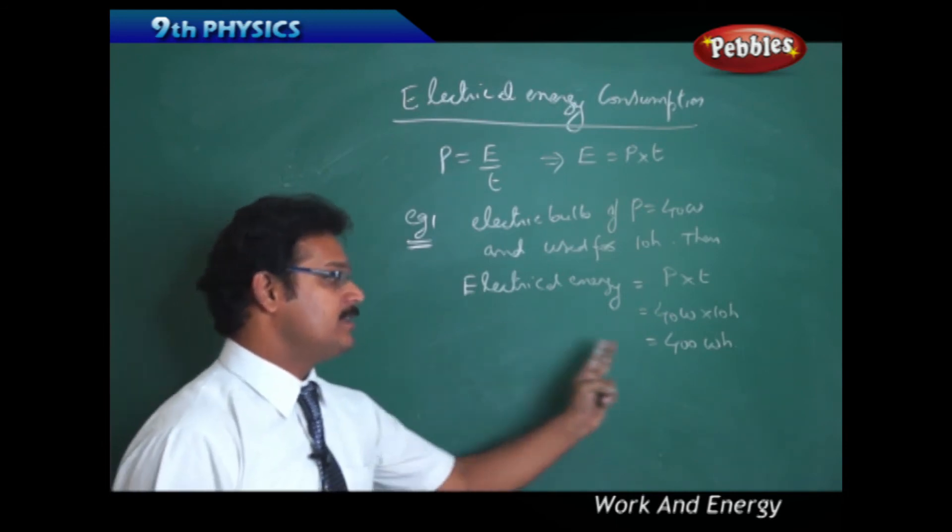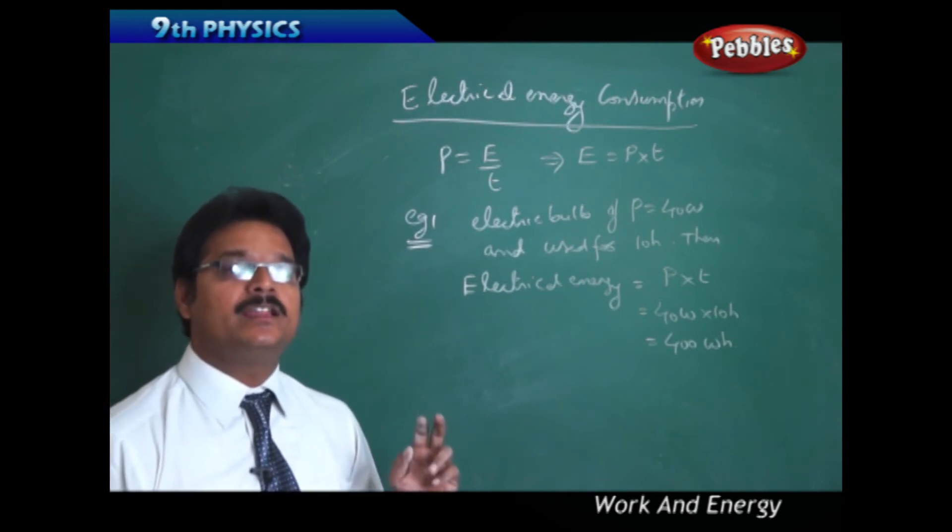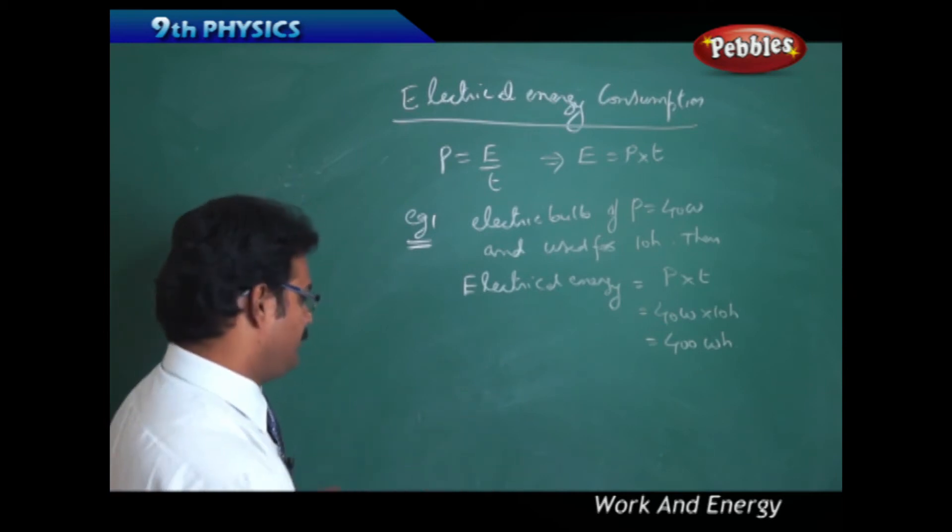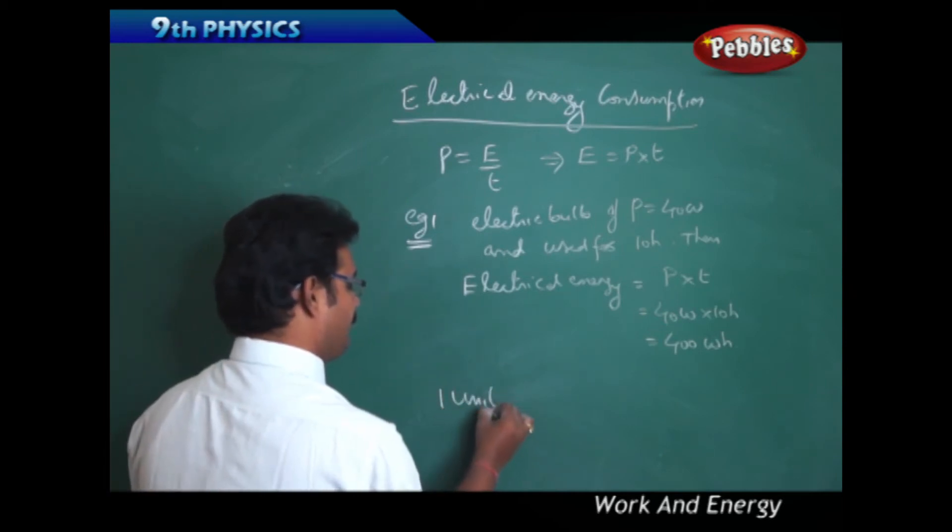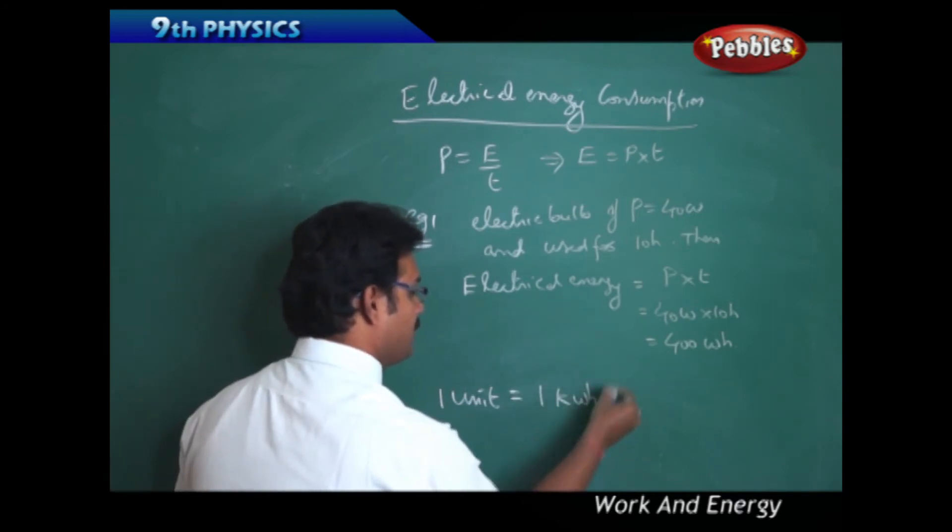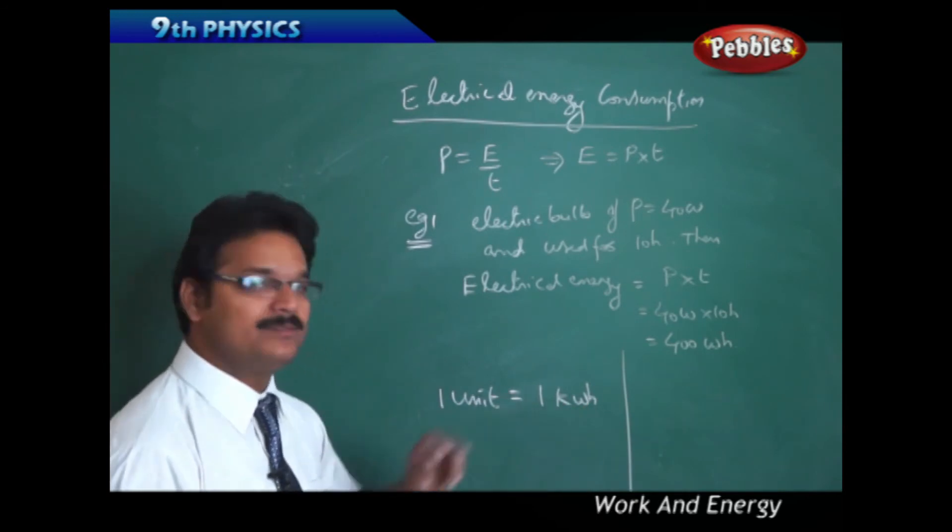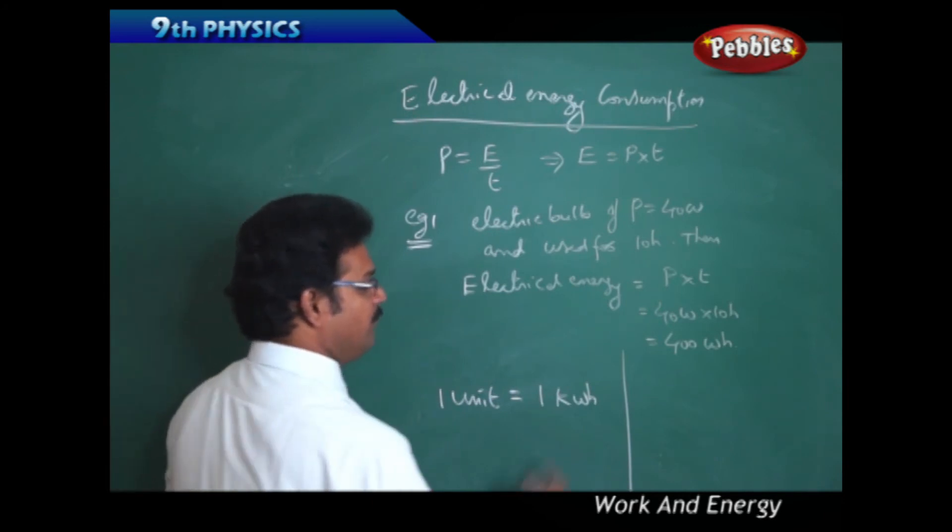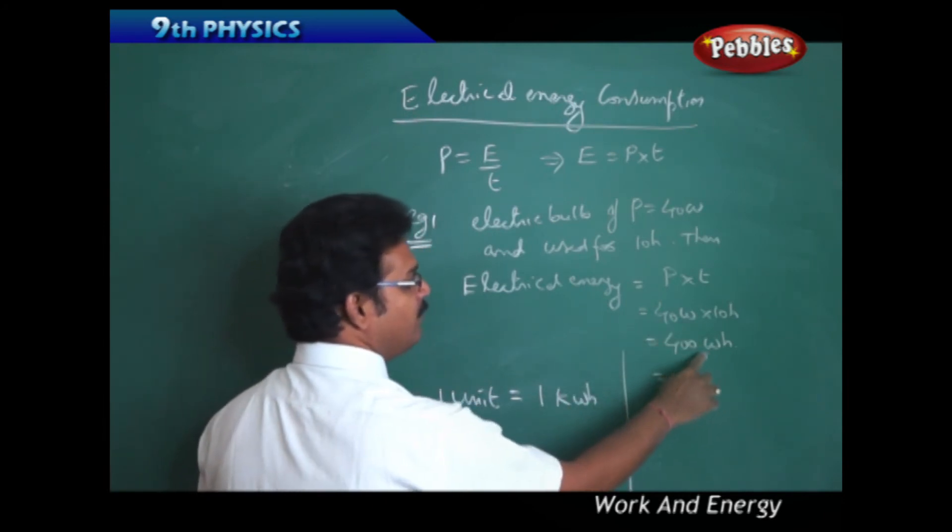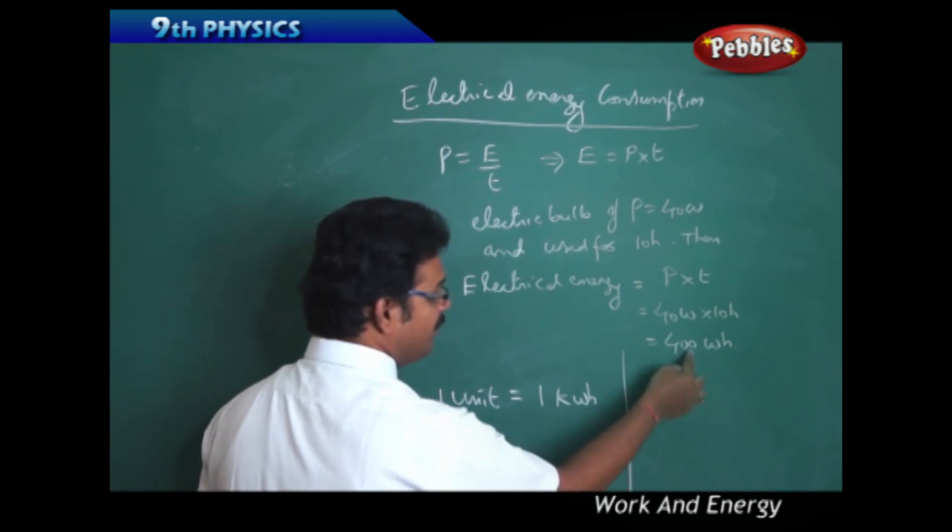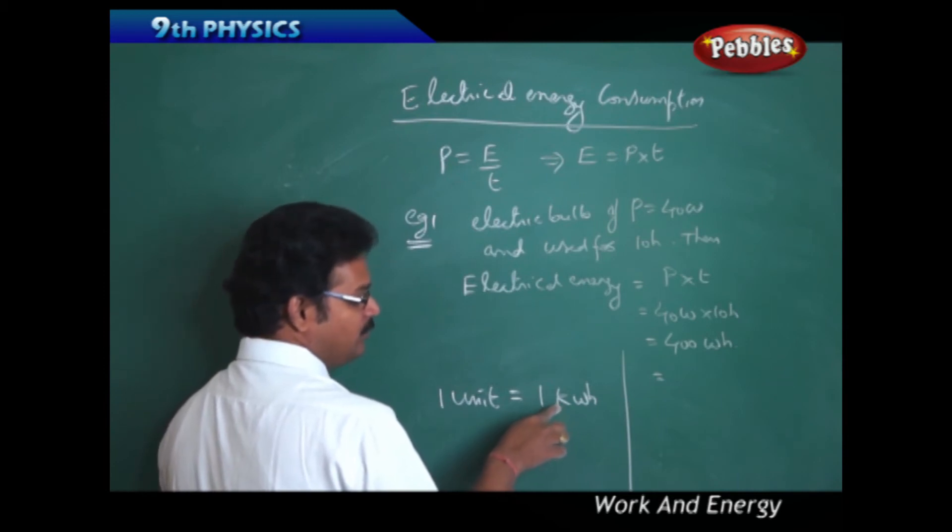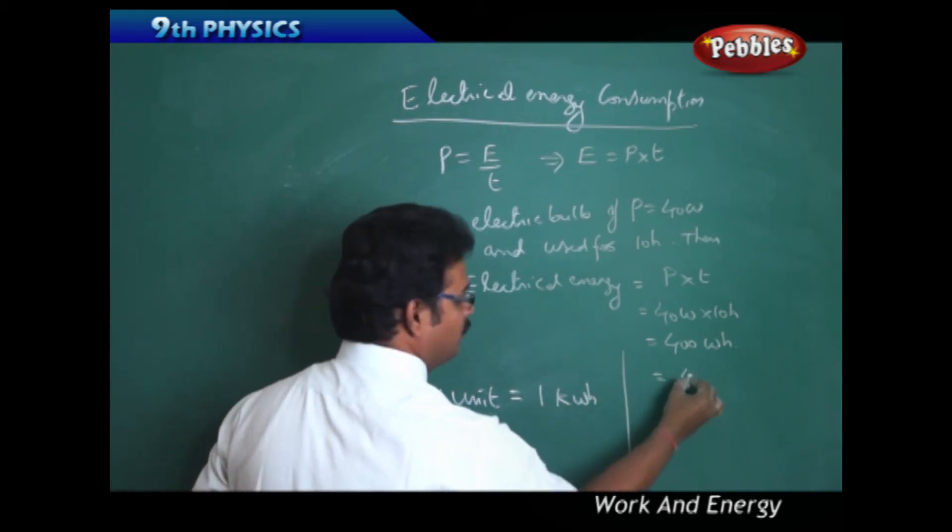But there is a change in this value. Generally electrical energy consumption shown in terms of units. One unit of electricity consumption equal to 1 kWh. So if you go back to this numerical, 400 watt hour is nothing but you should convert into kilowatt hours.